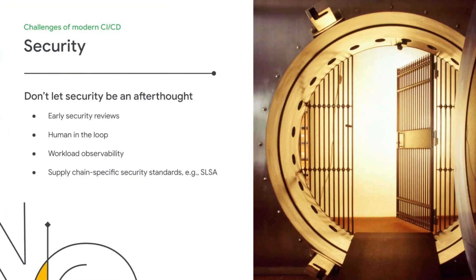First and foremost, I'd encourage you to bake security into your process and to do so early. You may want to consider potential bottlenecks and whether you can ease these by shifting left on security. This may mean that security reviews happen early, or even that developers are thinking about security as they code and do code review. Additionally, you may decide it's important to keep a human in the loop for code changes or releases that meet a certain risk threshold. Tooling like manual approvals and promotion can help out here. You also want to plan for workload observability, or knowing what code is running where. One last point here is that SLSA is a standard specifically concerning the software supply chain — not only does it describe the security you can achieve in your CI/CD pipelines, but it gives you an incremental path to get there.